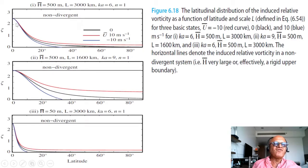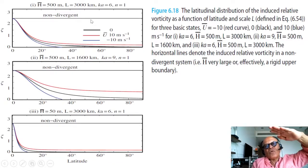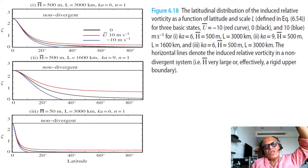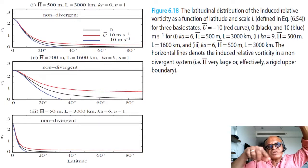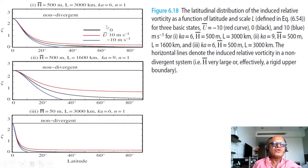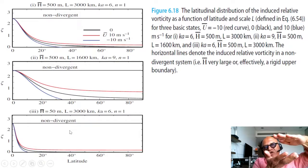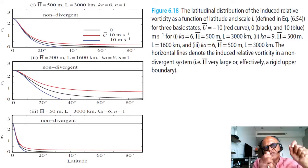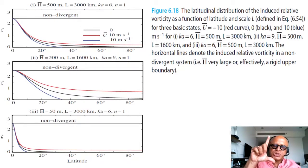The flow becomes non-divergent. It's a rigid lid or the equivalent depth is so large that the perturbations do not induce any vorticity. I hope you get a sense: non-divergent means there is no horizontal divergence, so you cannot change the height of the fluid column, so then there is no induced vorticity.